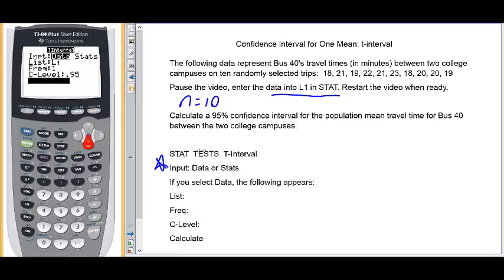Before we leave this screen, let's just make a couple of notes as to what we've done. We selected data. Our data is in list 1. Frequency is 1. Confidence level is 0.95. Now we're ready to hit calculate.